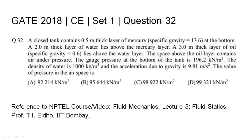GATE 2018 Civil Engineering Set 1 Question 32. A closed tank contains 0.5 meter thick layer of mercury, specific gravity 13.6, at the bottom. A 2 meter thick layer of water lies above the mercury layer. A 3 meter thick